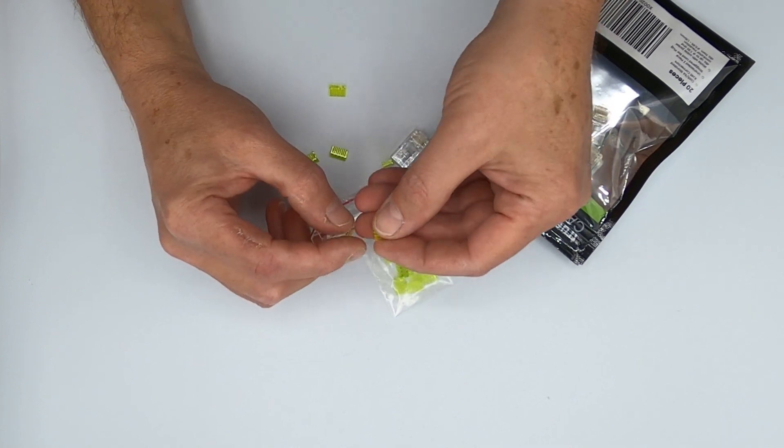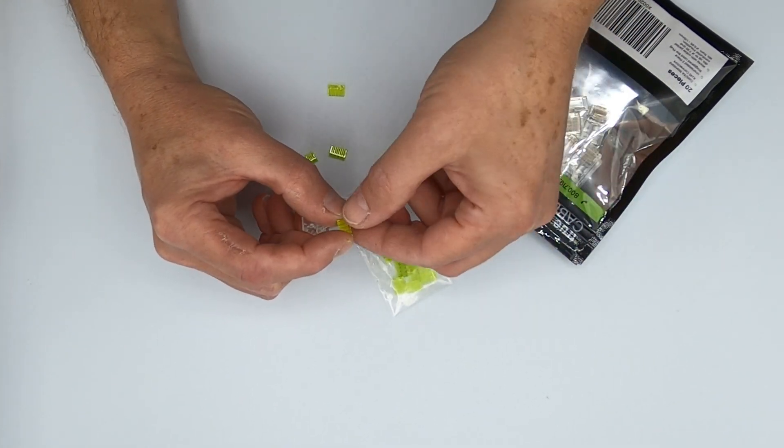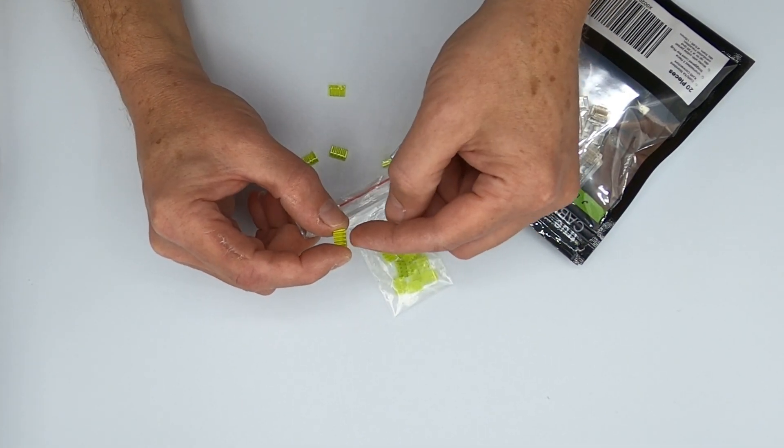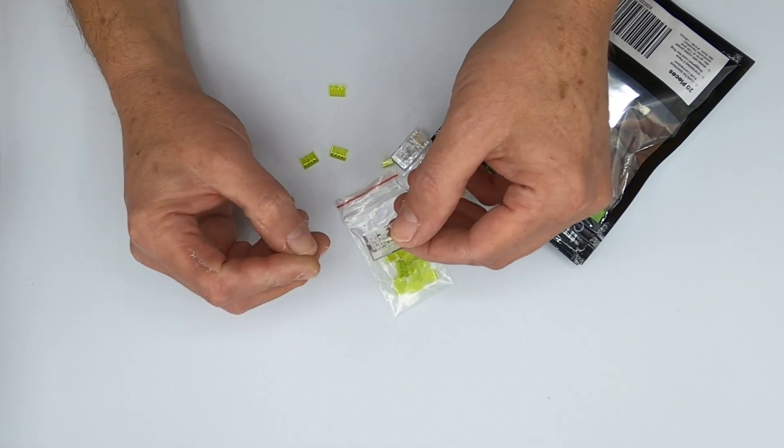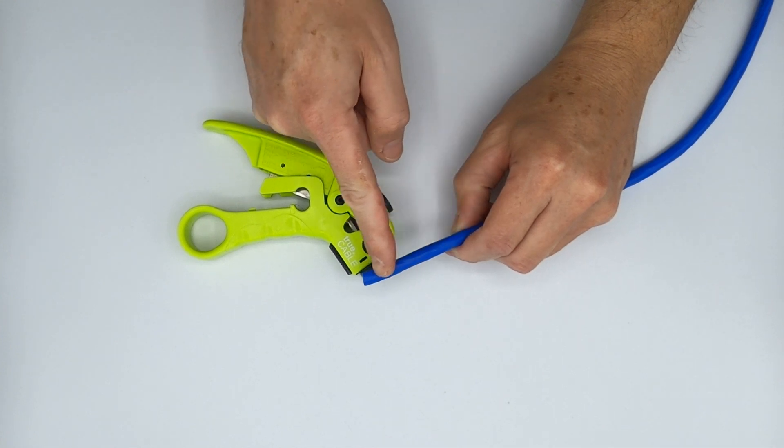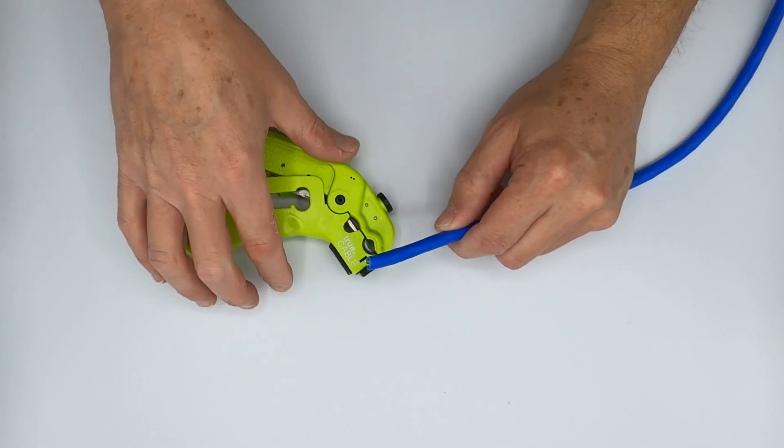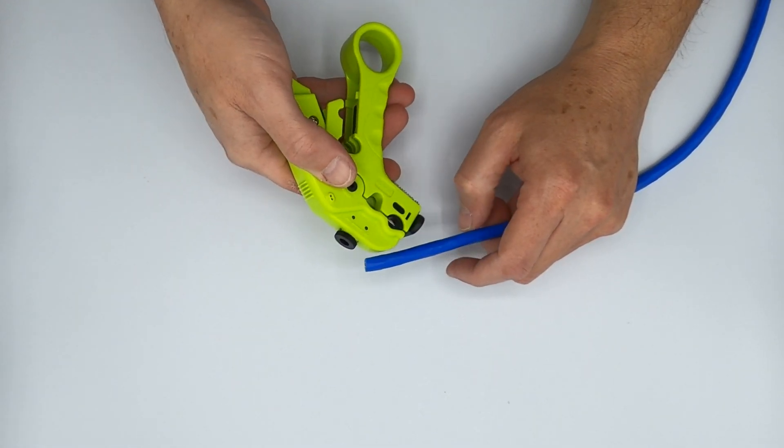It's designed to position the conductors onto a load bar and that's what sets the distance for you inside the plug. So let's get to it. Okay, so we have a category 6A cable here. It's an unshielded cable and we're going to go ahead and start from the beginning.